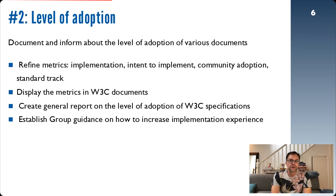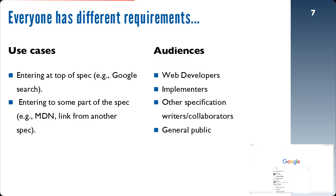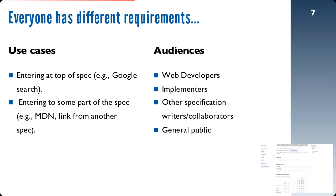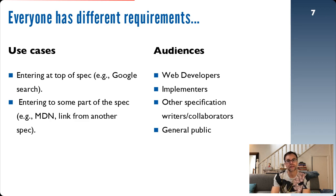As Philippe mentioned, this project is about showing the different levels of adoption of specifications — whether in browsers or other implementation types. We have two use cases we're really interested in solving: people entering the specification at the top of the document, for instance through a Google search, and people coming in through MDN or other sources and landing somewhere in the middle of a specification. We have different audiences — web developers, implementers, specification authors, editors, working group collaborators, and the general public — and everybody has different requirements. In the following slides, I'll show three solutions currently being deployed experimentally at W3C.